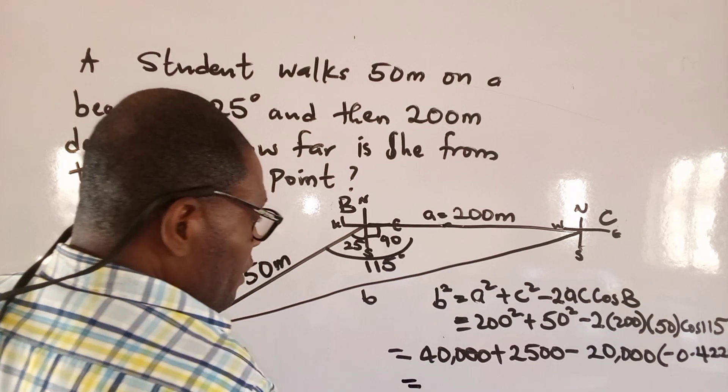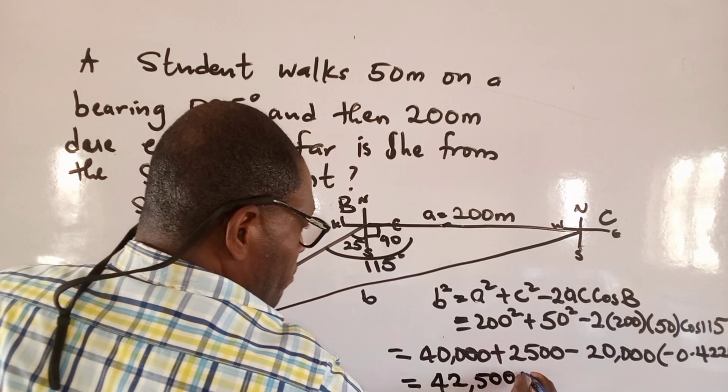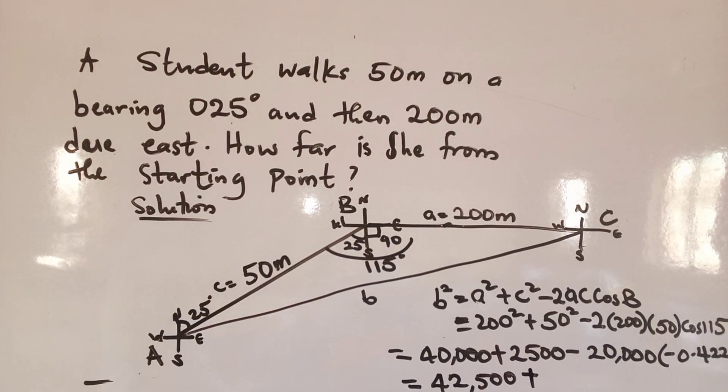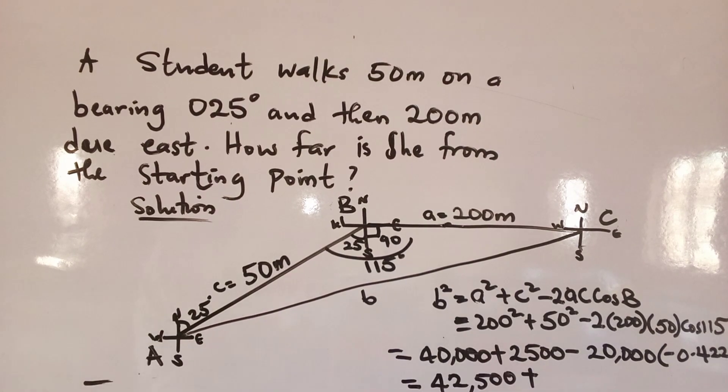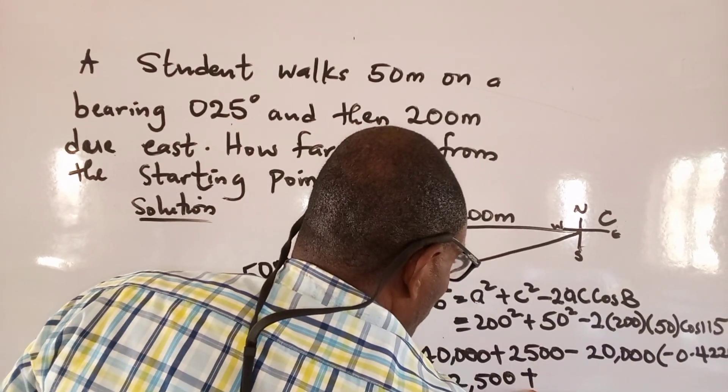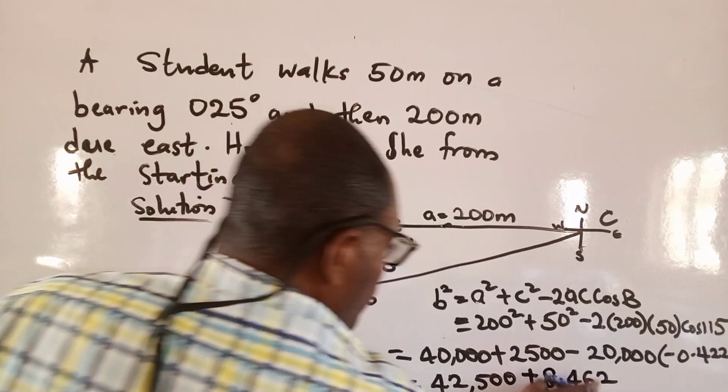So this will give me, add up 40,000 and 2,500. Minus times minus is plus. So multiply 20,000 times 0.4226, it will give me 8,452. This one minus minus will give me plus. So it's 8,452.